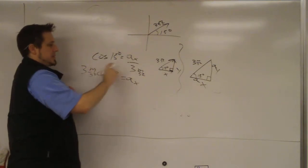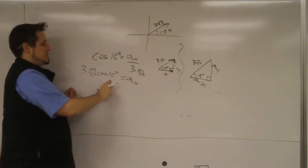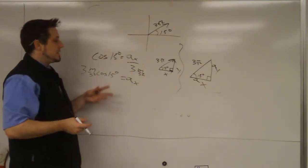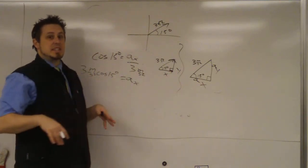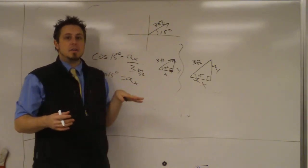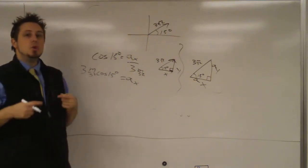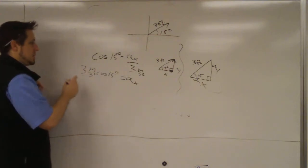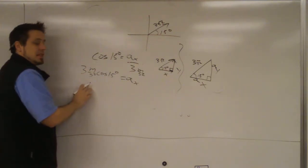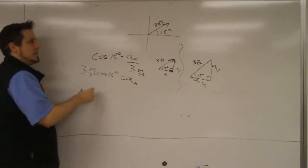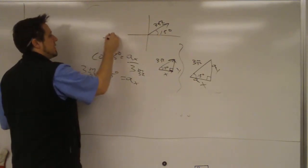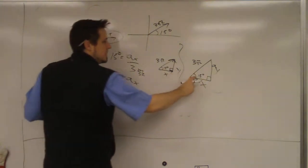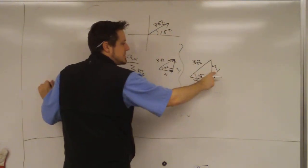The acceleration in the x-direction will be 3 meters per second squared times the cosine of 15 degrees — the same result as the automatic method. When using the trig method, you have to decide on the sign yourself. In this case it's positive because the vector is going to the right, so if you call up and right positive, you leave it as positive.